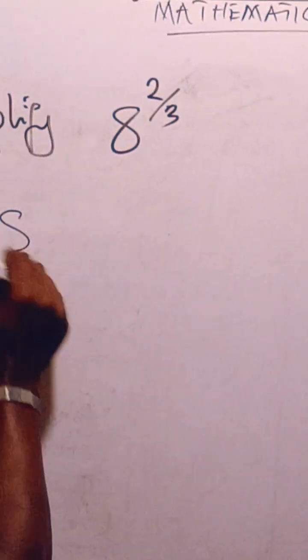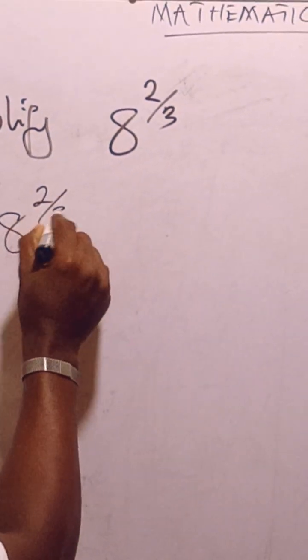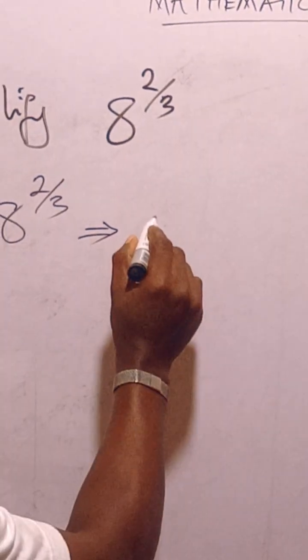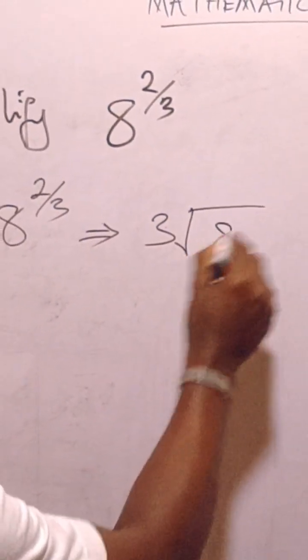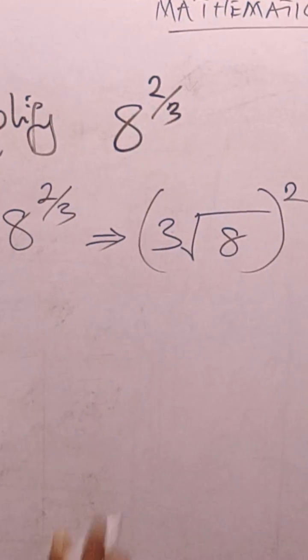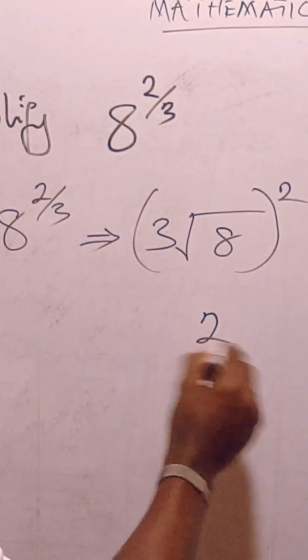This is simply, you see, 8 raised to power 2/3. This is simple from the indices - you get the cube root of 8 squared by 2. It's as simple as that, and the cube root of 8 is 2.